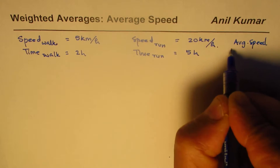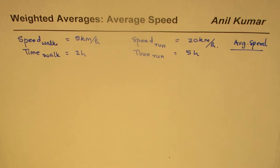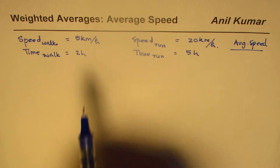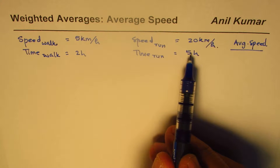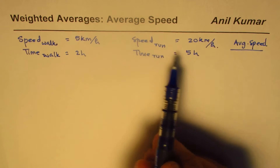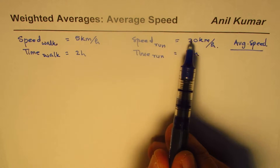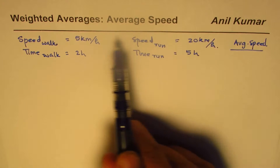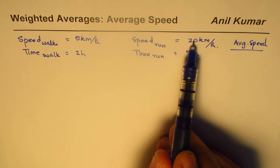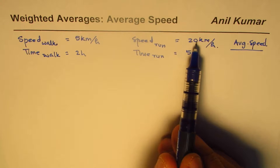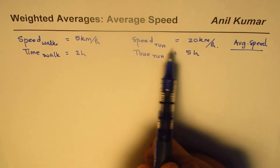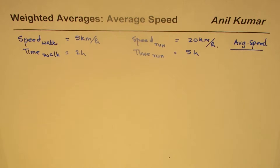How will we find the average speed of this person during this trip? Well, since the times are different, we cannot simply add these two speeds and divide by two. If you add 5 and 20 you get 25, and divided by two gives 12.5 — but let's check what we actually get with different times.